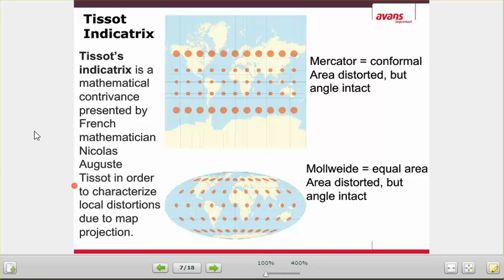Now we'll move into coordinate systems. We live on the Earth, and the Earth is an imperfect sphere. In order to get this sphere onto a flat two-dimensional surface — as I mentioned a few classes ago — we have to develop things called coordinate systems. The idea of the coordinate system comes from a French mathematician, Nicolas Auguste Tissot, who said that any map you make will be imperfect. So later they came up with different types of projections to compensate for this fault.